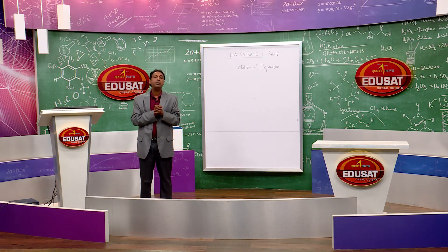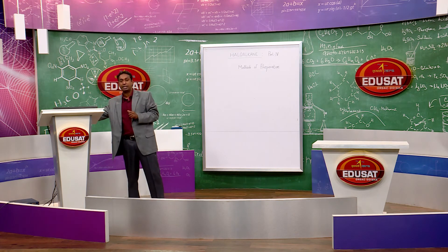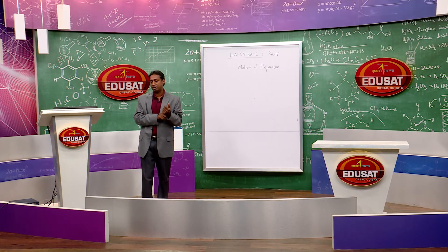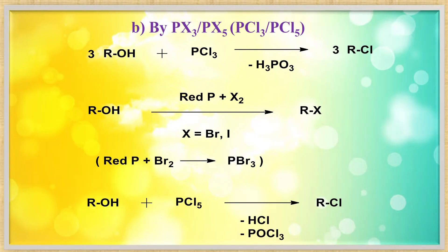Similarly, a 1,2-methyl shift: when the adjacent carbon has an extra methyl group (four substituents), the methyl group shifts to the carbocation carbon to form a more stable 3° carbocation. This gives the rearranged product.